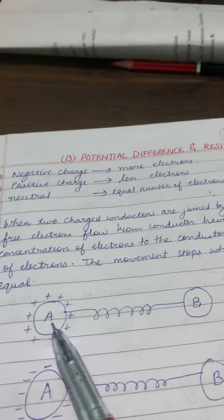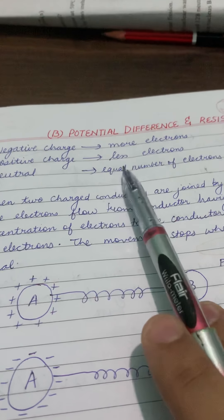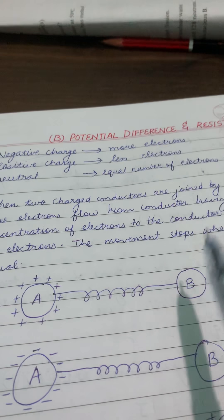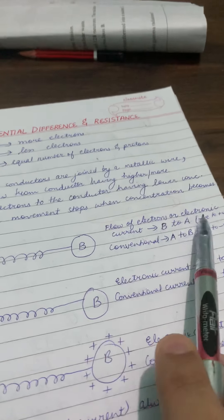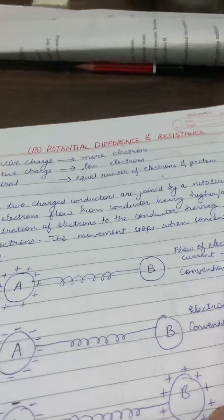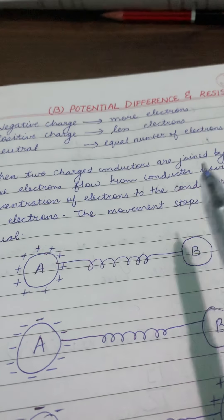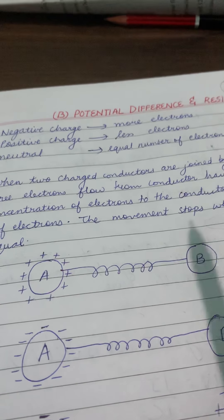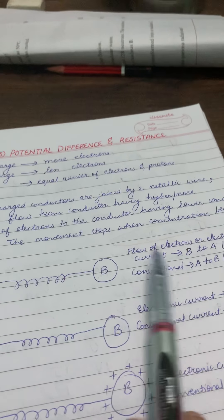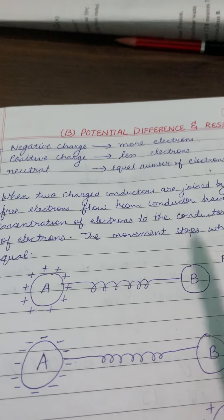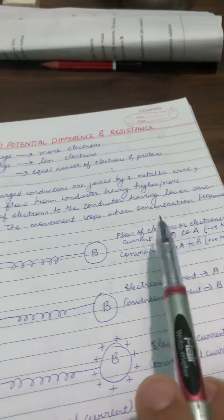Now in the first case, A is positively charged and B is uncharged. Positively charged means fewer electrons; uncharged means equal number of electrons and protons, so electrons are not less in B. Since electronic current always flows from negative to positive, B is more negative here, so electronic current flows from B to A. Conventional current, being opposite to electronic current, flows from A to B — that is, from positive to negative.